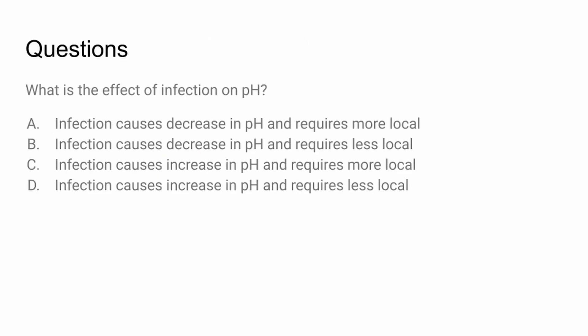What effect does infection have on pH? Answer A: infection causes a decrease in pH and requires more local anesthetic. This is correct because infection causes the body to become more acidic, and therefore we need more local anesthetic. Clinically, we should inject proximal to the site of infection so that we can use overall less anesthetic.